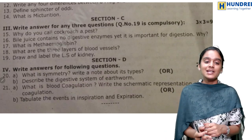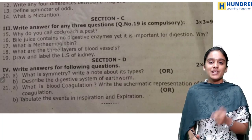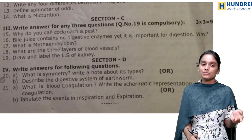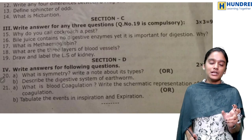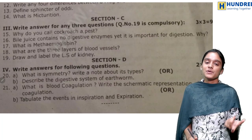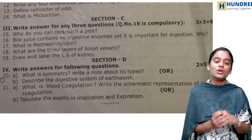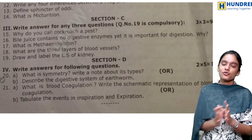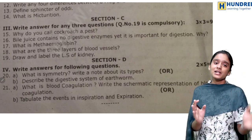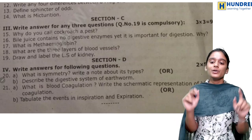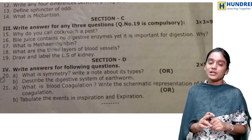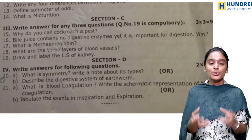Section D five marks — you have to attend two questions. What is symmetry? Write a note about its types: you have to mention three types — radial, bilateral, and asymmetrical — along with diagrams. Next, describe the digestive system of earthworms — mention all parts, especially gizzard and typhlosole. What is blood coagulation? Write a schematic representation using arrow marks. It is like a flowchart — you can see it on the left side of the book.